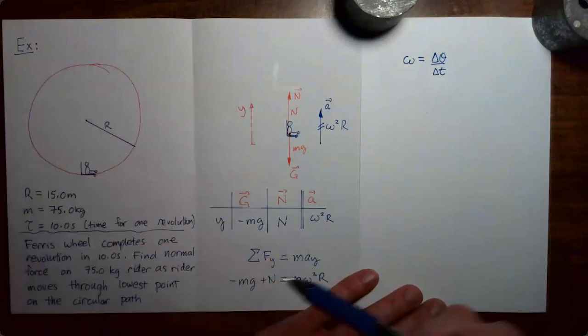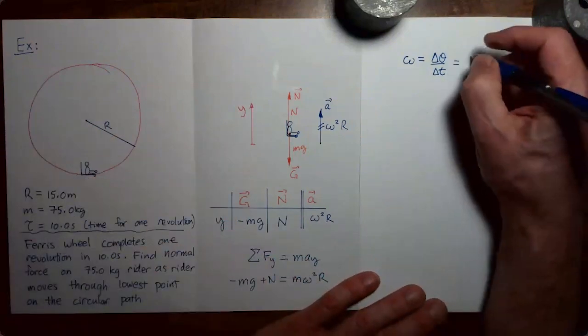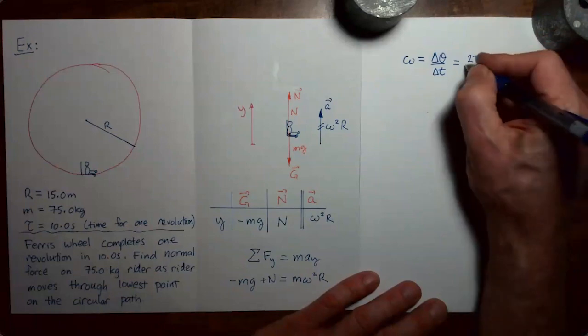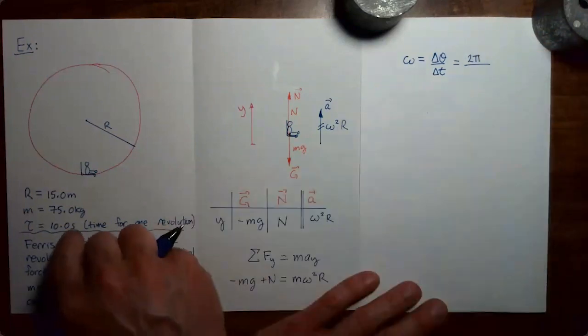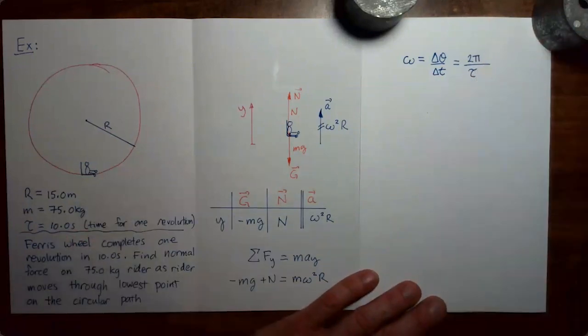To get the angular velocity of the rider in this problem, it's most convenient to think about the rider making one complete rotation. In one complete rotation, the change in angle would be 2 pi radians. I'll just put that there as 2 pi. And then the time interval is given as 10 seconds, but I'm going to denote that as tau.